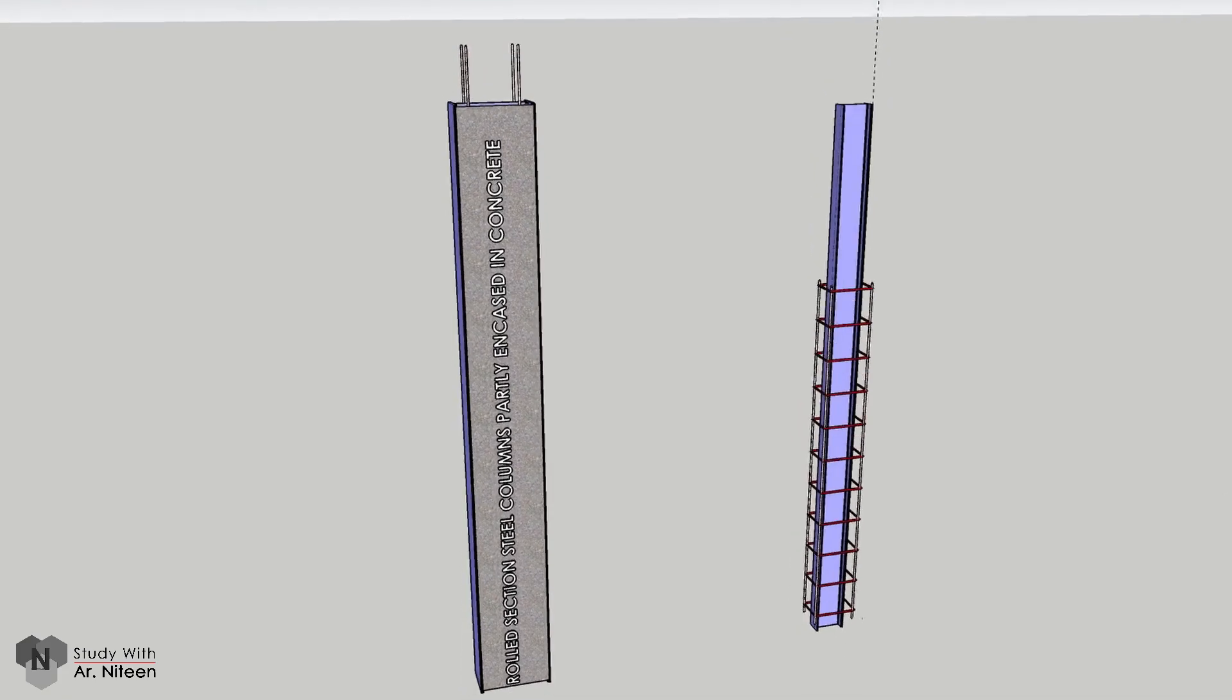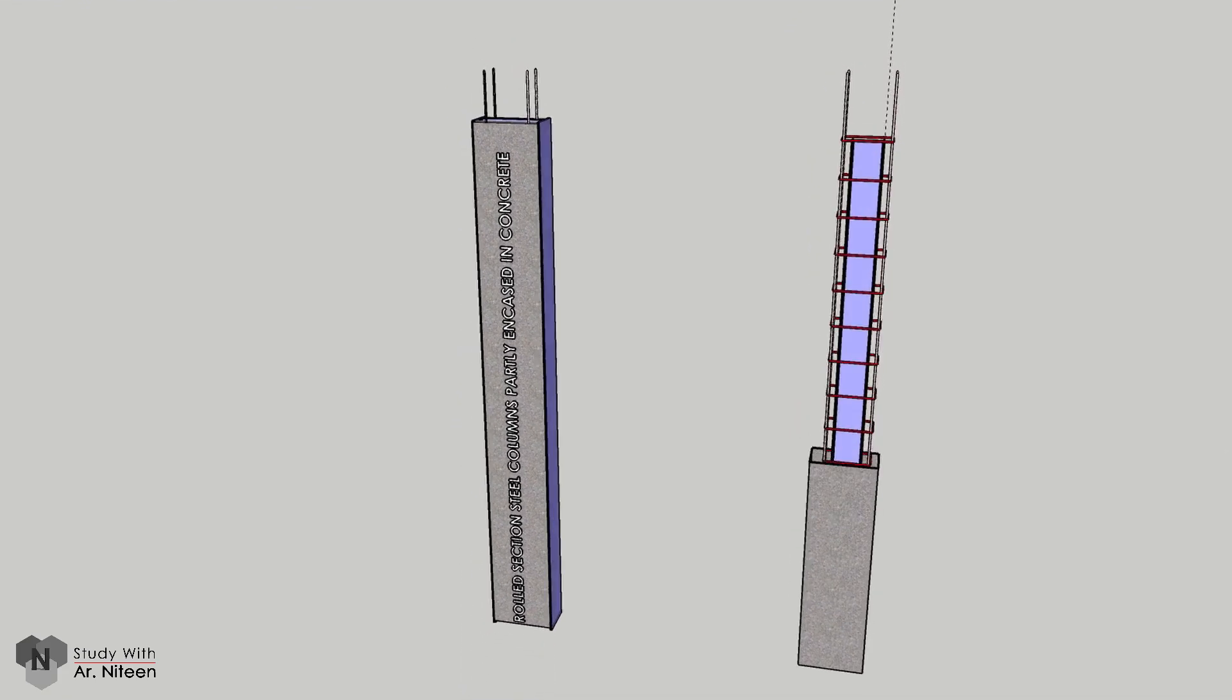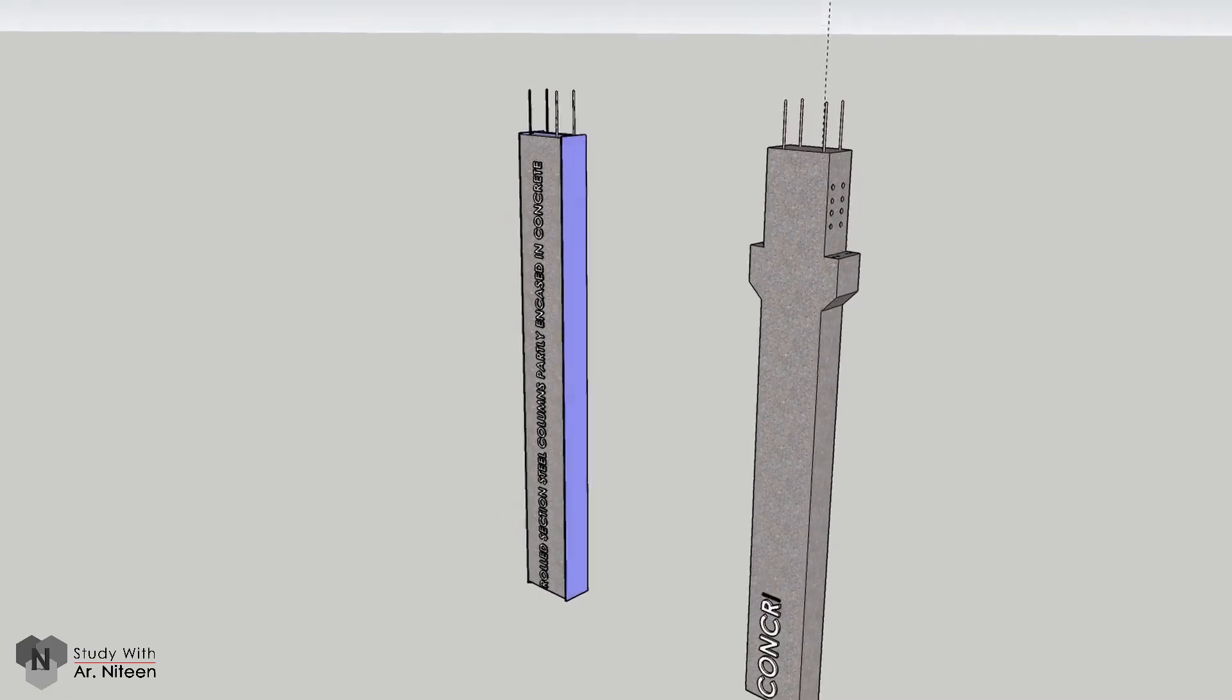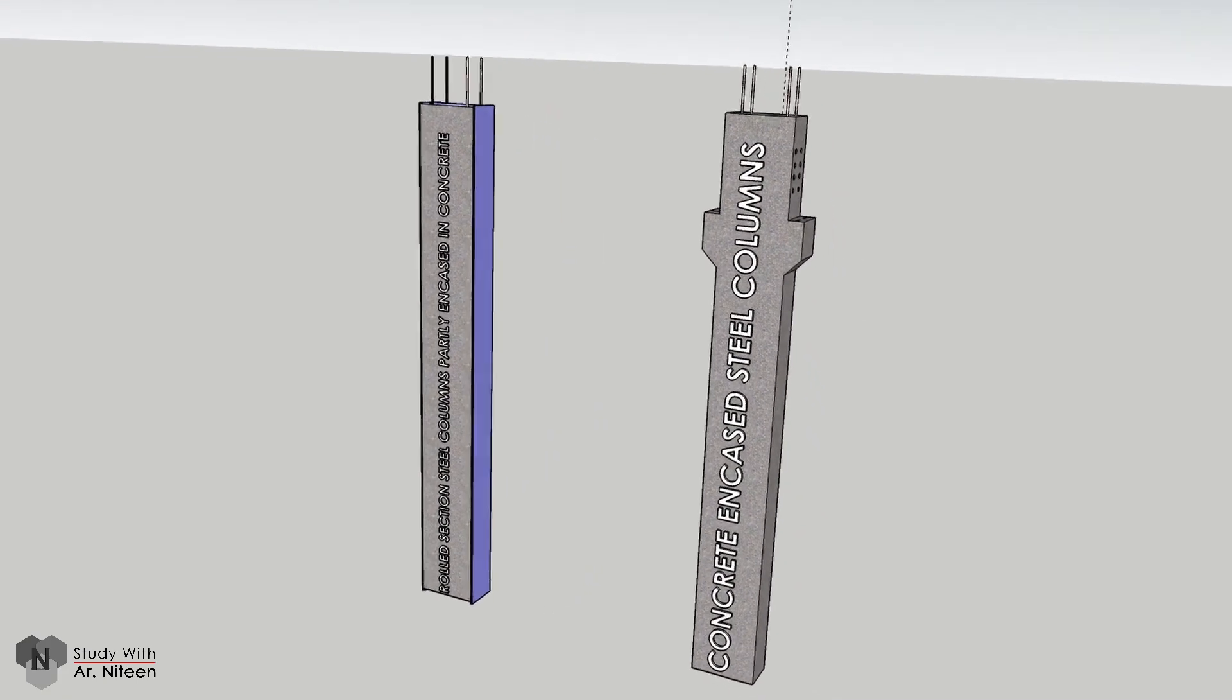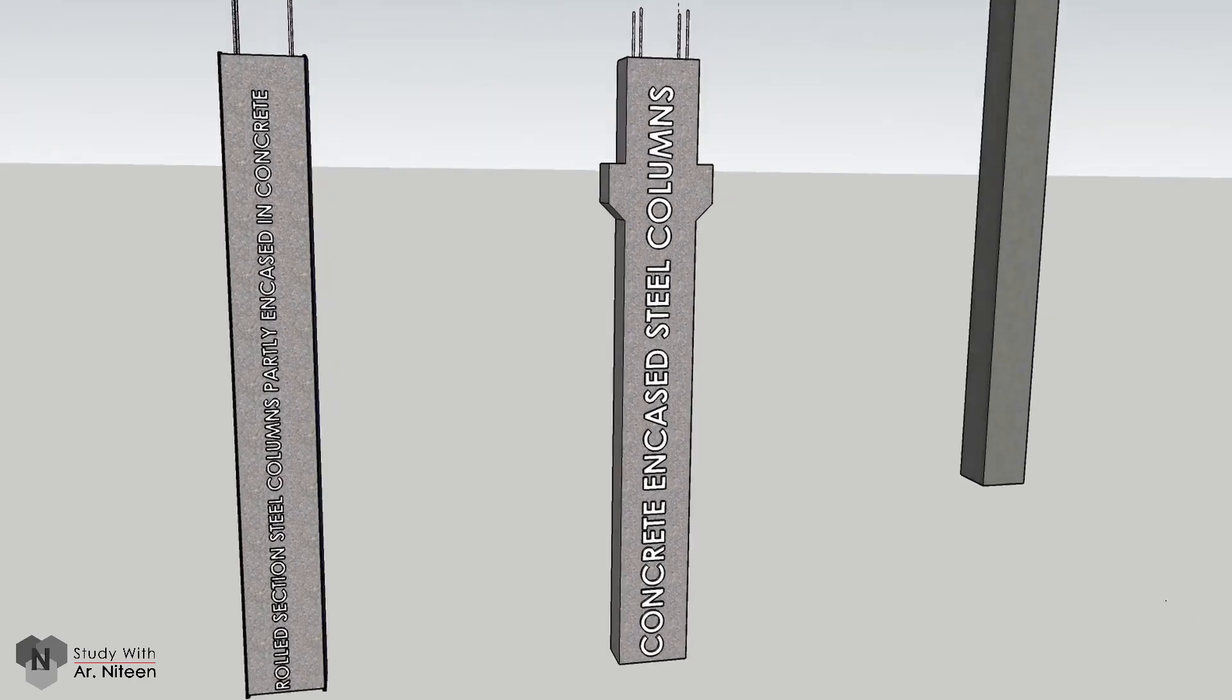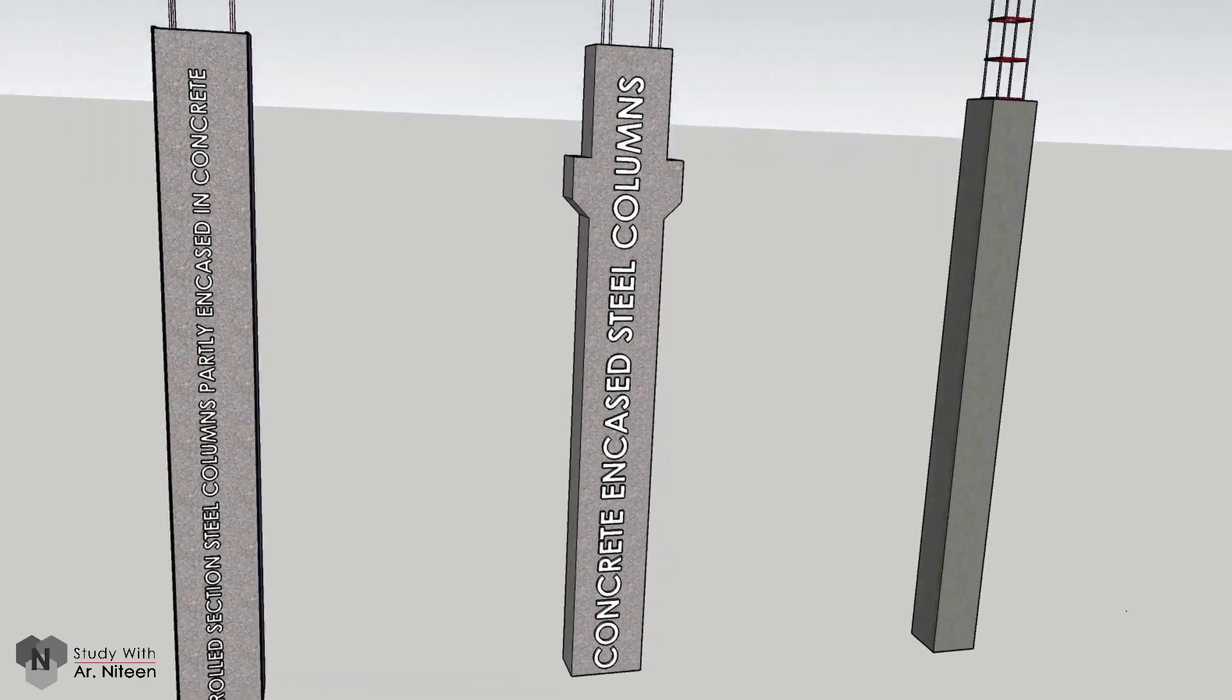Concrete encased steel columns. The steel section is completely encased in the concrete with the help of reinforcement. Concrete filled steel tubes which can be square, rectangular, or circular. Reinforcement and concrete is filled in the tubes.